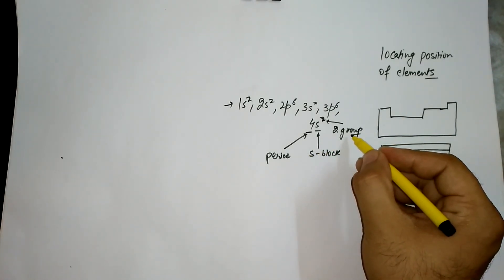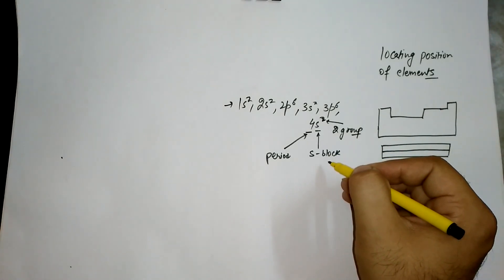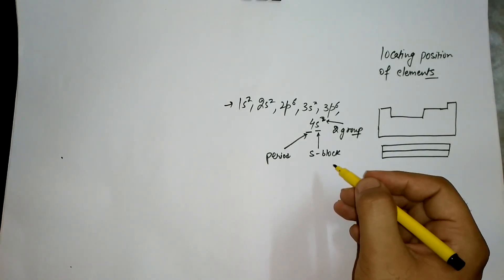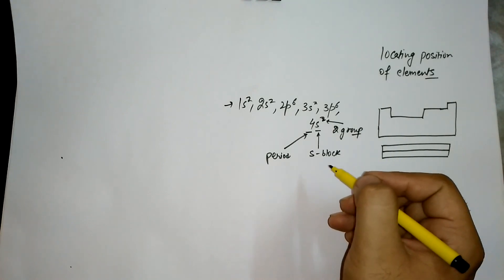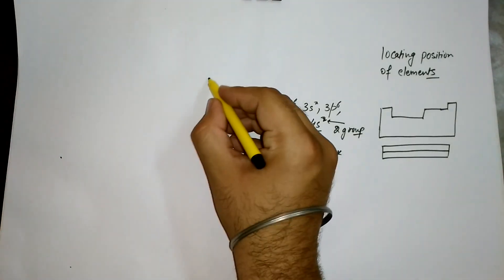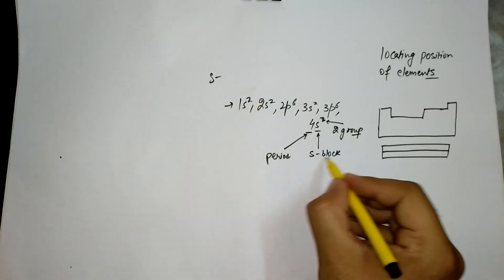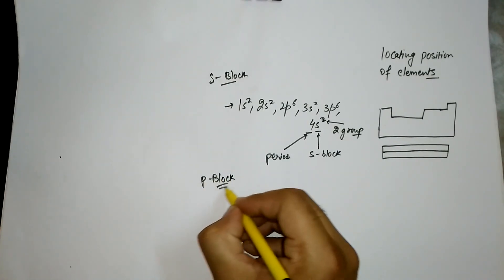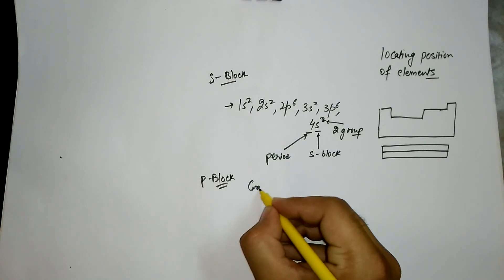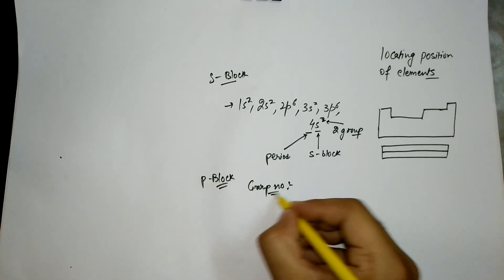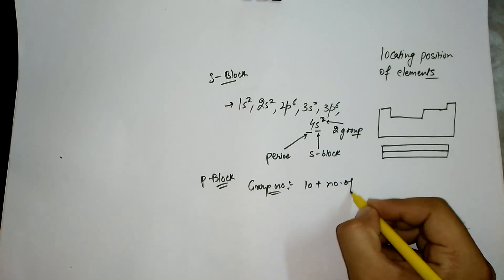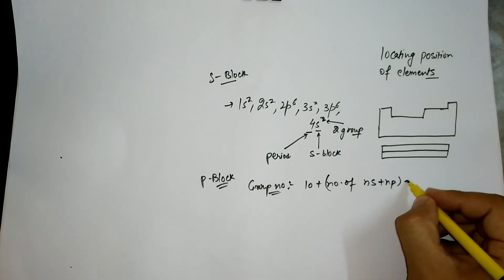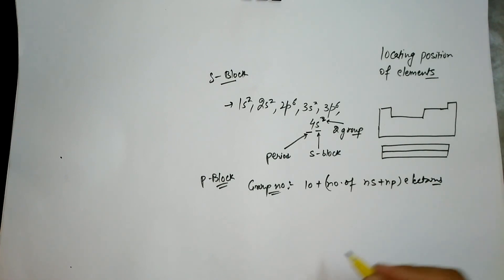Now, what about the p-block elements? When we talk about p-block elements, the group number is equal to 10 plus the number of ns plus np electrons.